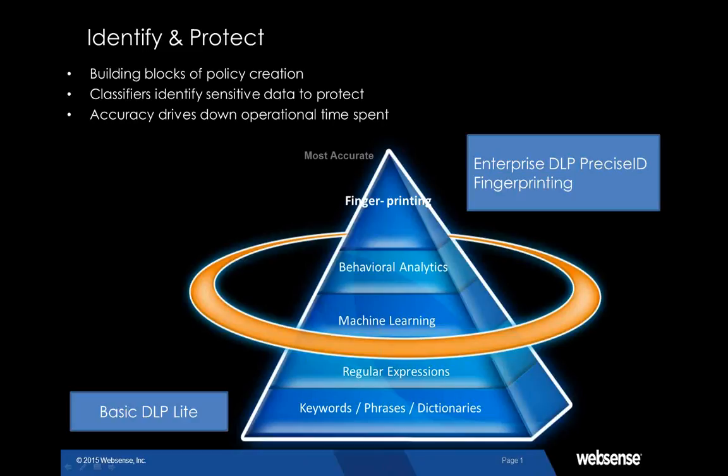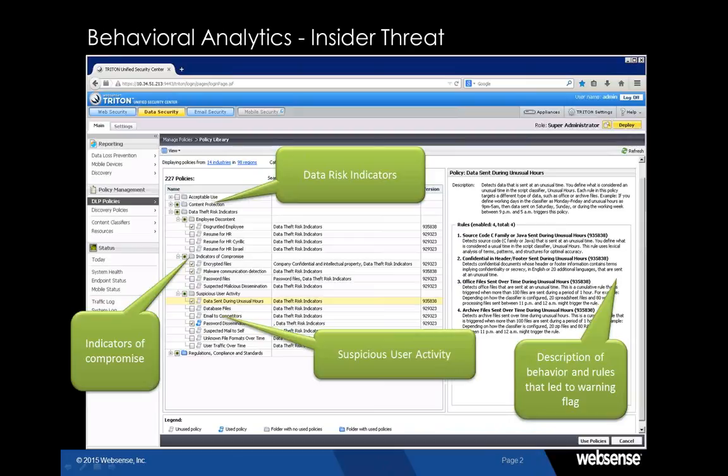DTP — data theft protection — is a way of using DLP without data classification and without relying on fingerprinting, even if we can use that after the DLP project matures in the organization at a later stage. These are the different techniques and different levels of data protection we can apply with our DLP solution.